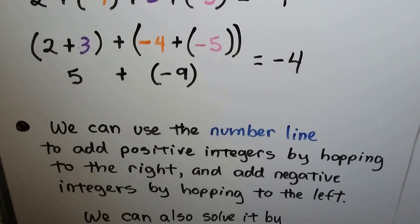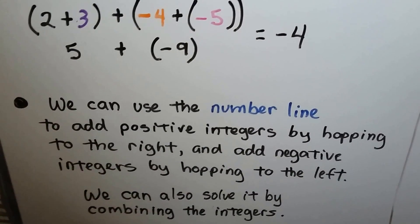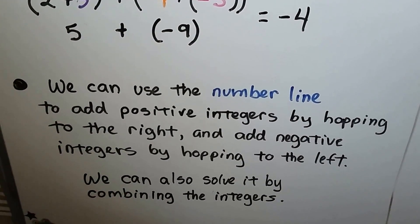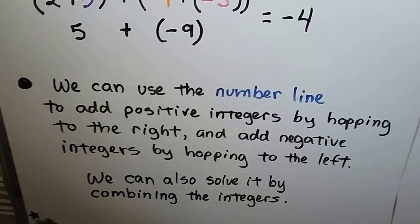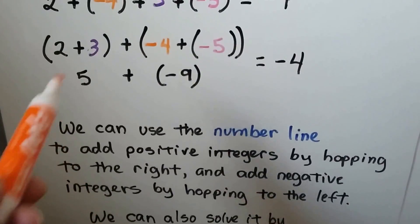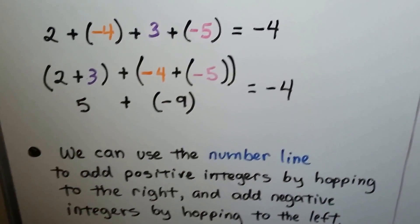We can use the number line to add positive integers by hopping to the right and add negative integers by hopping to the left. We can also solve it by combining the integers like we did.